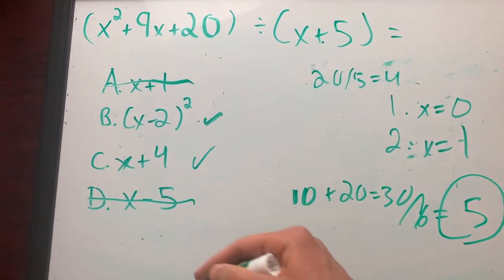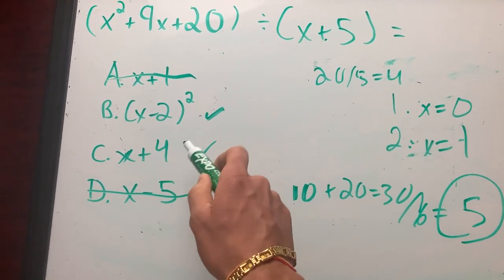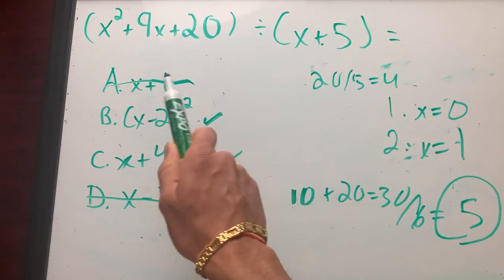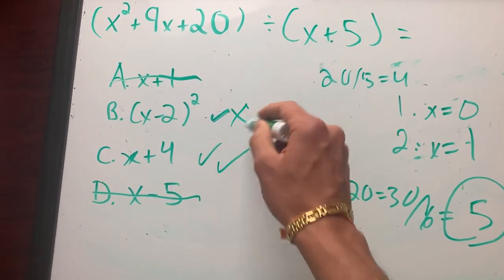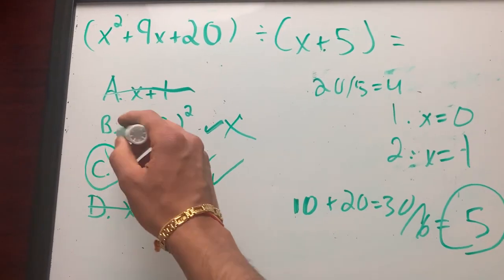So now I plug in one into these two and see which one gives me five. One plus four is five, so this works. One minus two is negative one squared, which is one, so that does not work. So C is the answer by process of elimination.